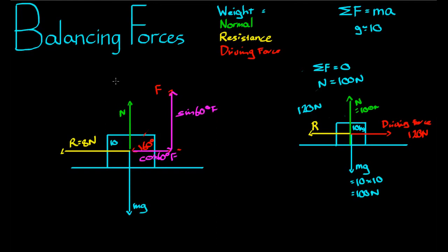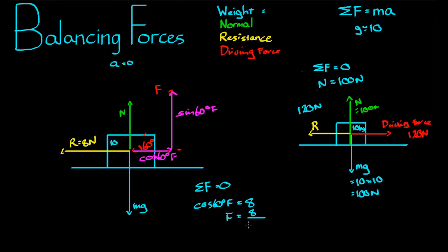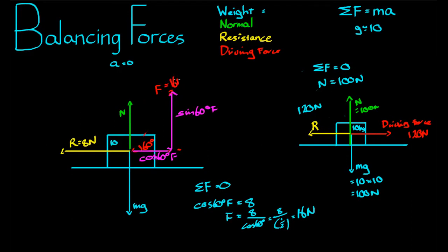The object is stationary, so the sum of forces horizontally is zero and the sum of forces vertically is zero. If the sum of forces horizontally is zero, then cos 60° × F equals the resistance force. So the driving force F equals 8 divided by cos 60°, which equals 8 divided by one half, which equals 16 newtons. So that driving force was actually 16 newtons in size.